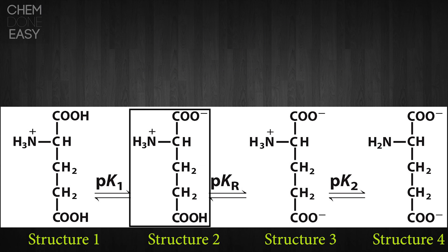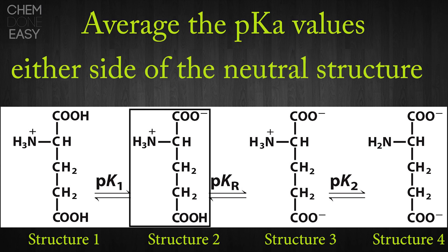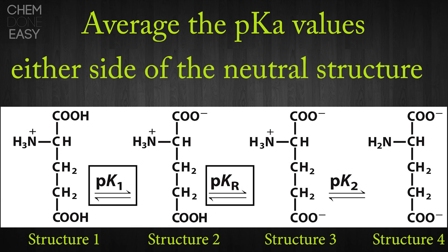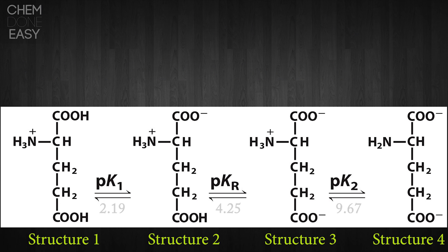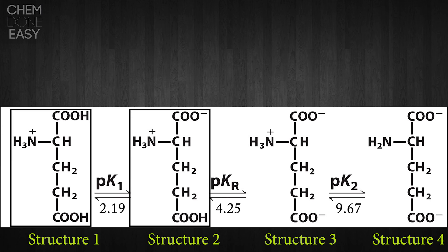Instead, what we want to do is we want to take the average of the two pKa values on either side of our neutral structure. We can see that the equilibrium, the pKa value for structure one and structure two has a pKa of 2.19.